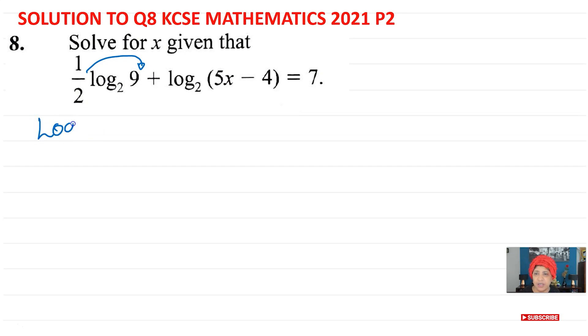We have log 9 to the power half base 2 and then plus log of all this to base 2, 5x minus 4 equal to 7.